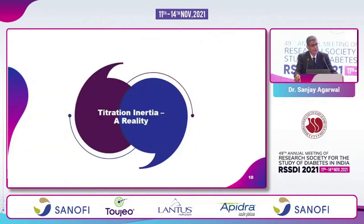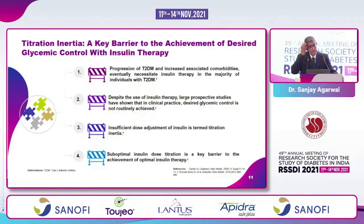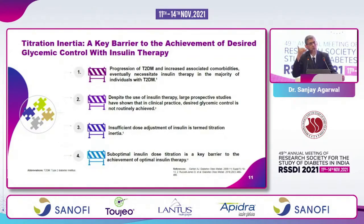Titration inertia is a reality. Inertia can take various forms — not just failing to initiate therapy. Progression of type 2 diabetes eventually requires insulin therapy in the majority of patients. If we don't initiate required insulin that's one form of inertia. Despite using insulin, if we don't bring patients to optimum insulin requirements, that's also inertia. Insufficient dose adjustment is termed titration inertia, and suboptimal dose titration is a key barrier to optimal insulin therapy.